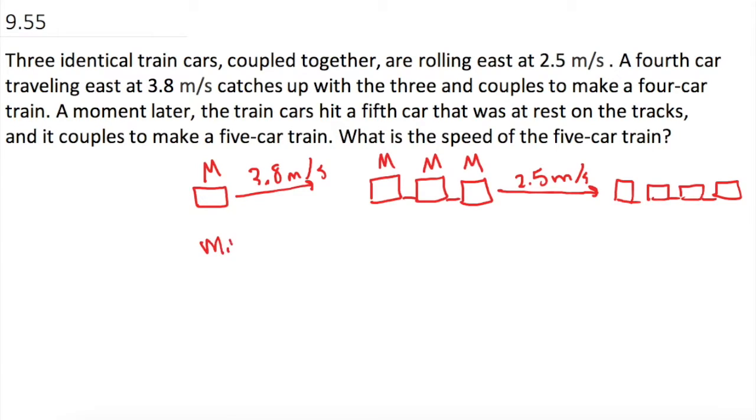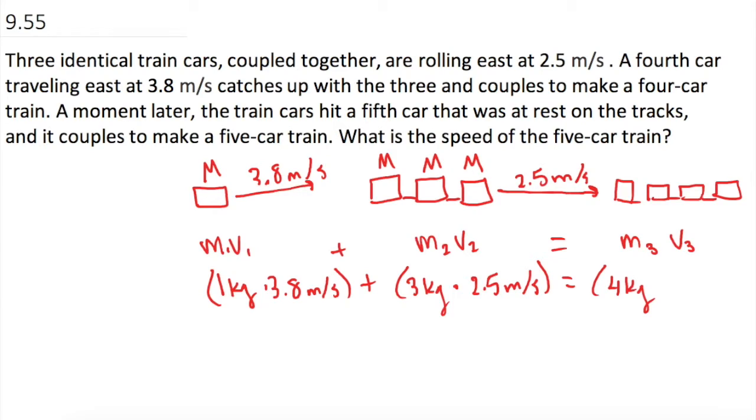So we have M1V1 plus M2V2 is going to equal M3V3. So now what are the masses? Well, this is 1 kilogram times its speed of 3.8 meters per second plus the mass of these ones, and there's three of them, so that's 3 kilograms times their velocity, which was 2.5 meters per second, equals the masses of all of them together, which is now 4 kilograms, times their speed, which we don't know and we will need to find out. So let's go ahead and solve for that.